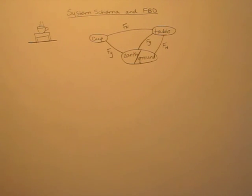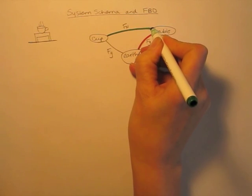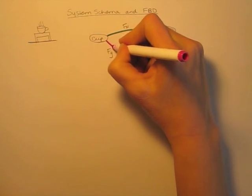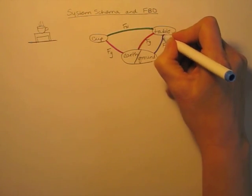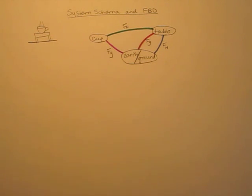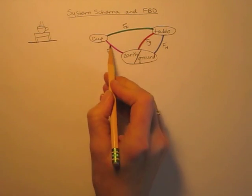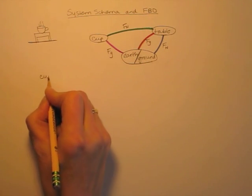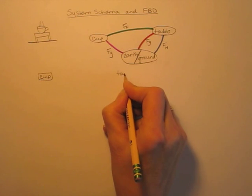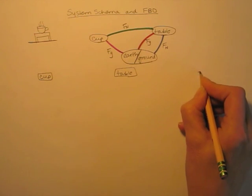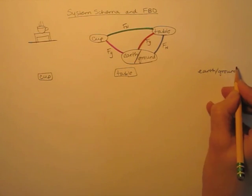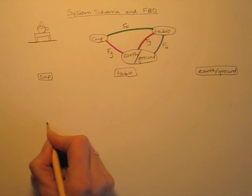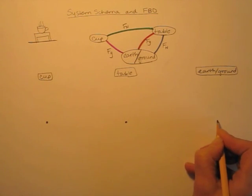Now what I'm going to do is color code each interaction a different color. Now we're ready to draw a free body diagram for each of these objects. So the cup is going to be here, and the table, and the earth-ground combination. I need a dot to represent each object.